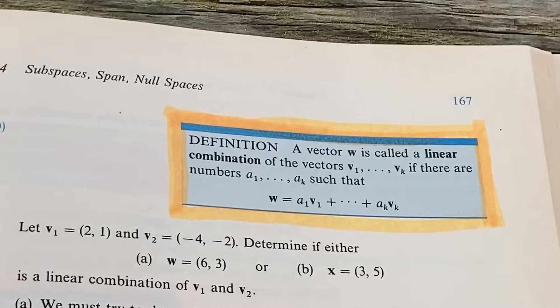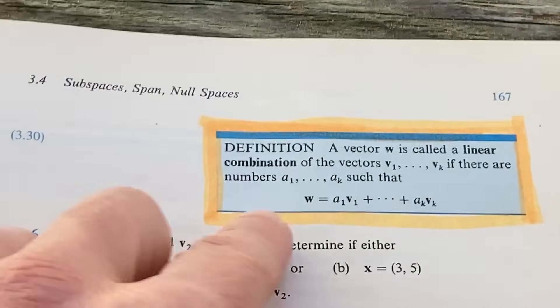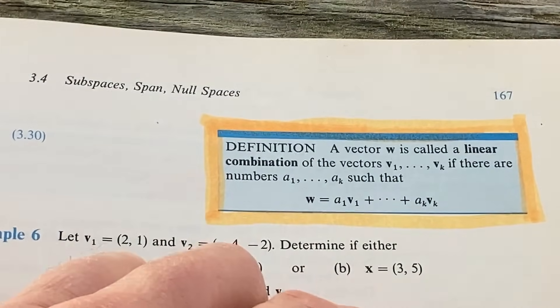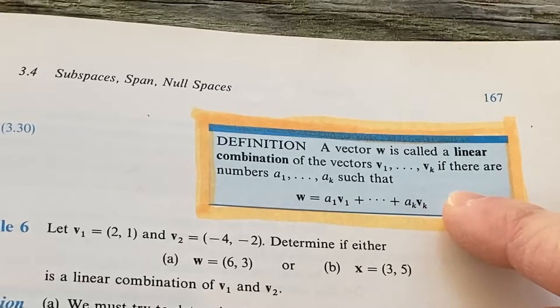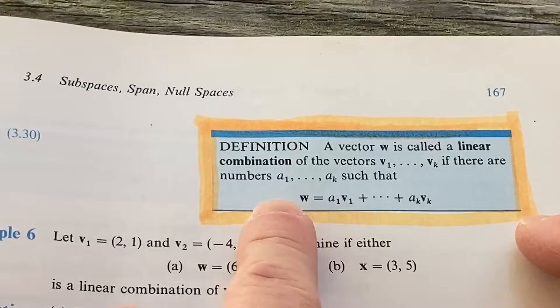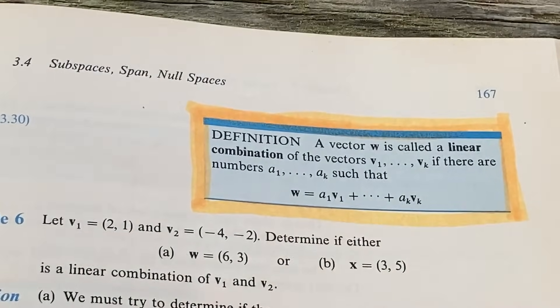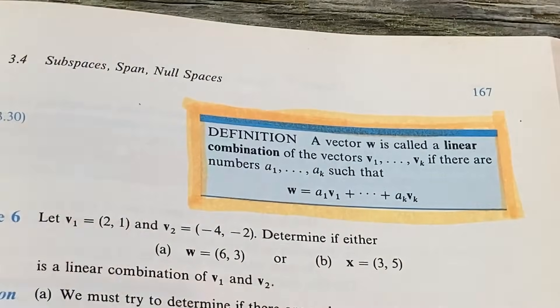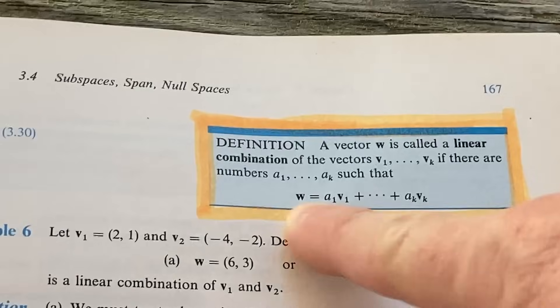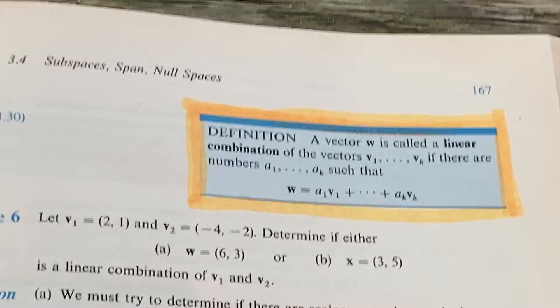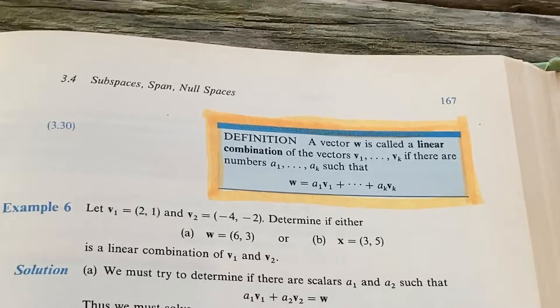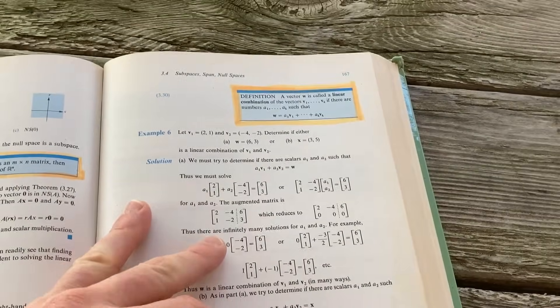So vector W is called a linear combination of these vectors here, V sub one through V sub K, if there are numbers A sub one through A sub K such that W is, and I'm just going to say W is a linear combination because that's what it means. So when someone says linear combination, boom, you should know that. And you can have linear combinations of different types of vectors.